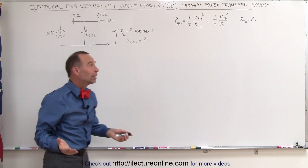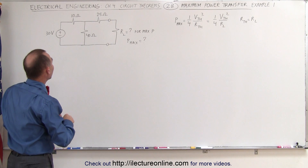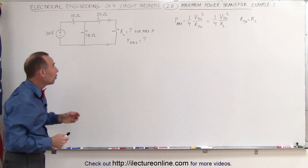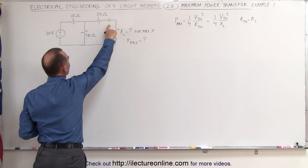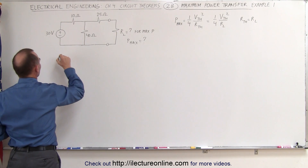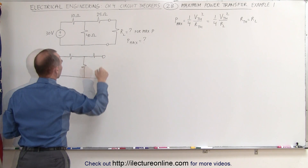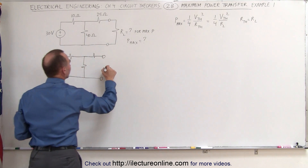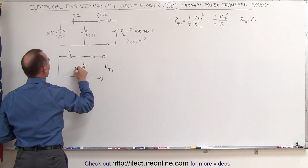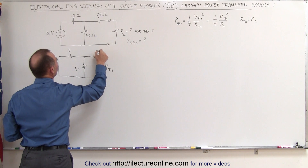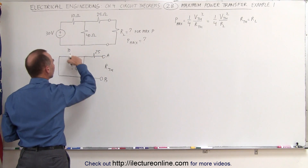What we need to do is find the Thevenin equivalent resistance and the Thevenin equivalent voltage. To find the Thevenin equivalent resistance, we set the voltage source equal to zero and open the circuit between A and B to find the equivalent resistance. So let's draw the circuit. We find our Thevenin equivalent: a 10-ohm resistor, a 40-ohm resistor, and a 25-ohm resistor from A to B. The 10-ohm and 40-ohm resistors are in parallel.